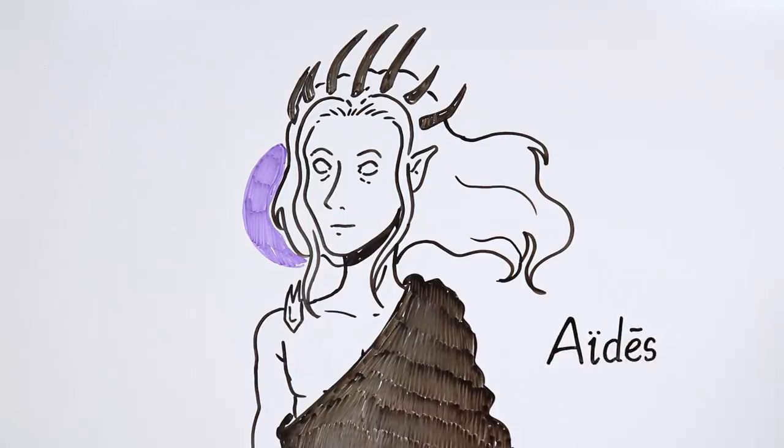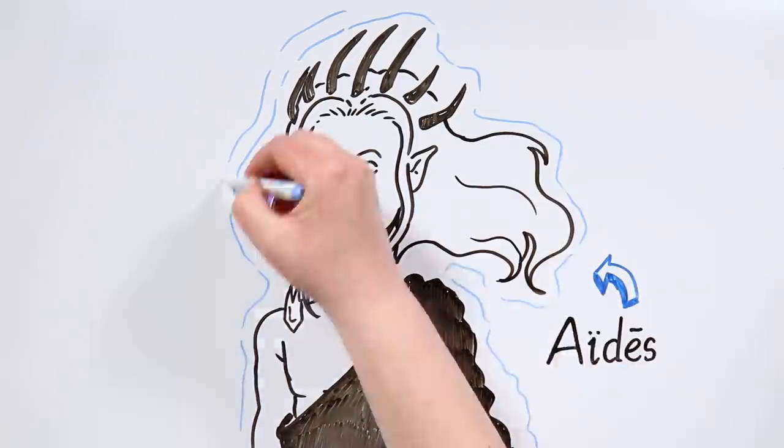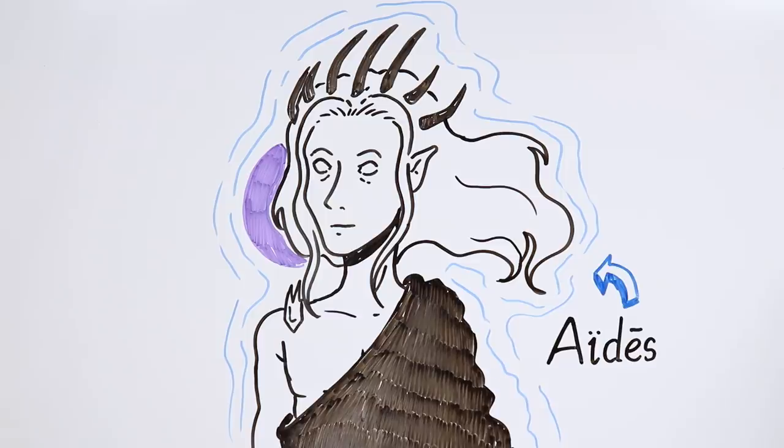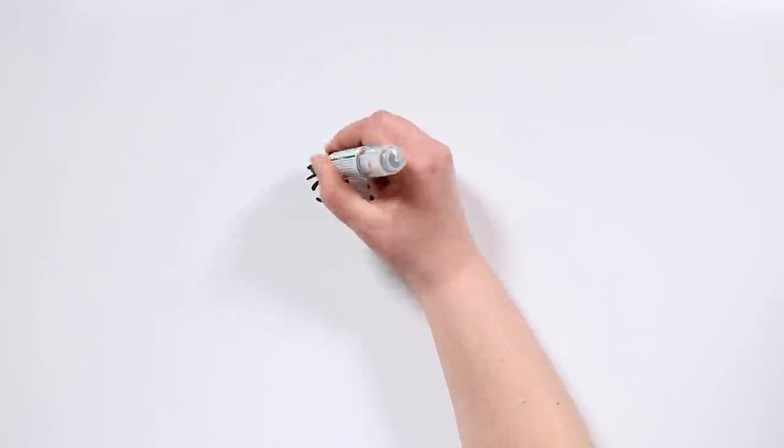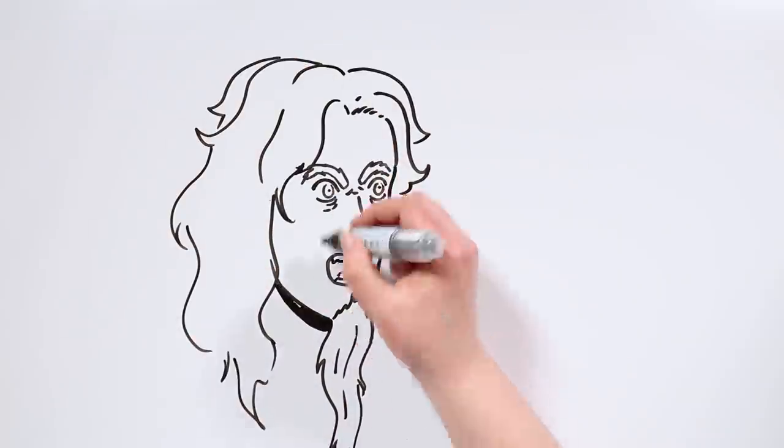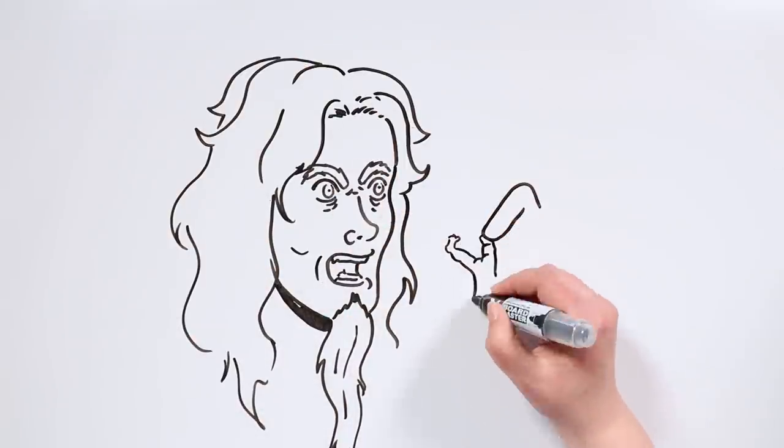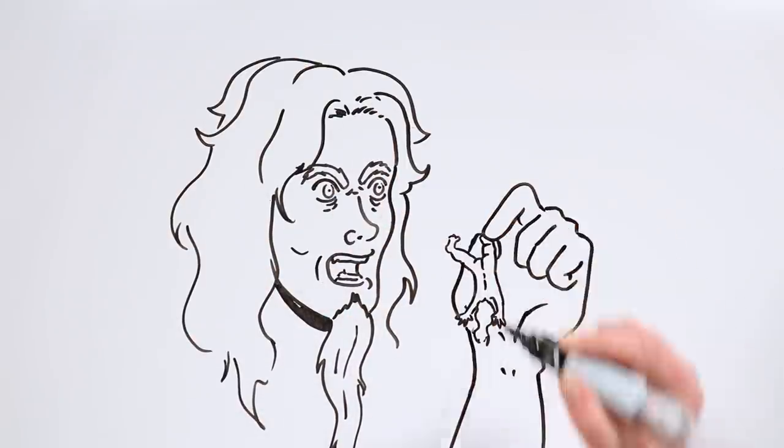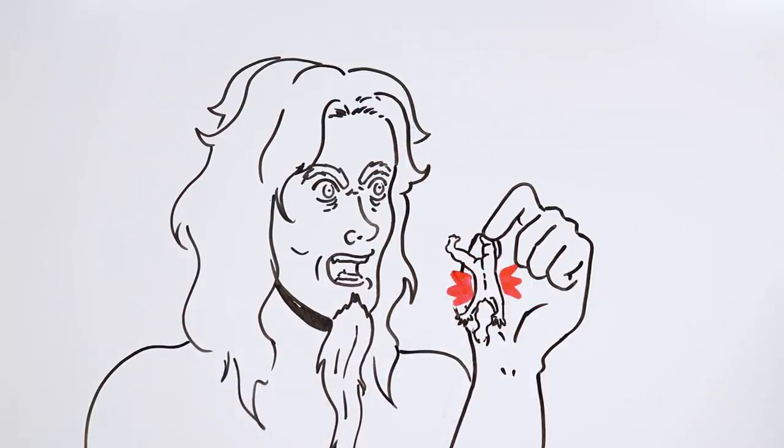His name comes from the word Aedes, which in ancient Greek means the invisible one. As you know, Kronos feared that Uranus' prophecy would be fulfilled, which said that one of his own sons would dethrone him. That's why Kronos would eat all of his descendants, and Hades was no exception.